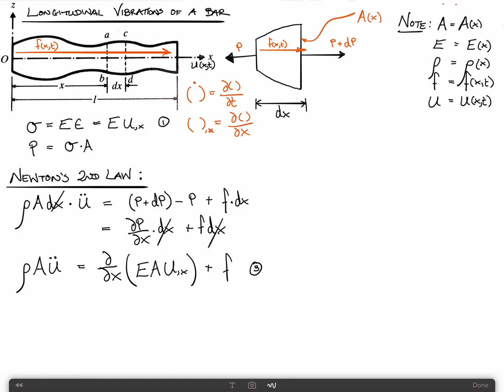But we can further simplify it for a uniform, homogeneous bar. This means that E and A and rho are constant. Then we end up with rho A u double dot equals E A u comma xx plus f. Call that equation 4.